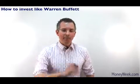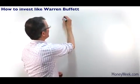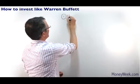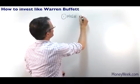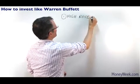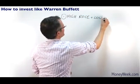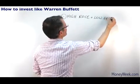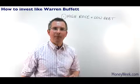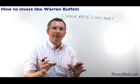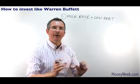The Warren Buffett way. Number one, you want companies with a high ROCE — return on capital employed — and low debt. High return on capital employed means they are generating annually lots of bang per buck.